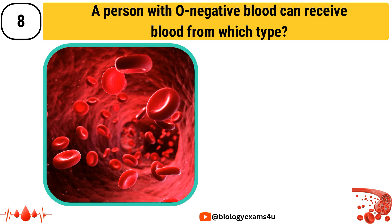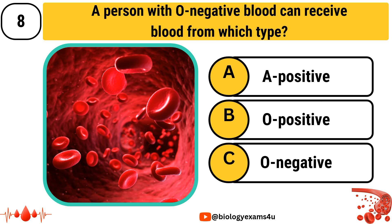A person with O-negative blood can receive blood from which type? The options are Option A: A positive, Option B: O positive, Option C: O-negative.